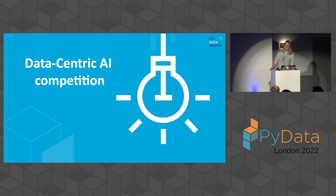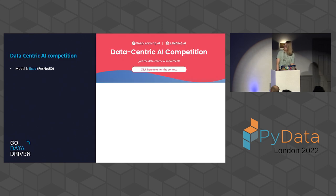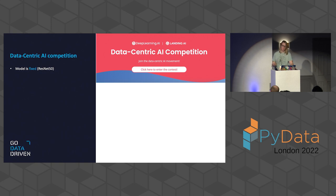That brings me to the data-centric AI competition, which ran for six weeks in September 2021. Data-centric AI is described as the discipline of systematically engineering the data used to build an AI system. In this competition, the model was fixed — a ResNet-50 — but the data could be changed. This made it more accessible because you didn't need beefy GPUs to compete; you needed about 10 MB of storage and an internet connection to submit your version of the training and validation set.